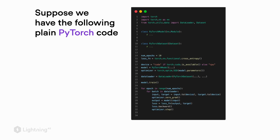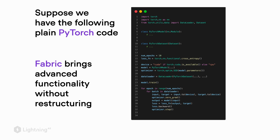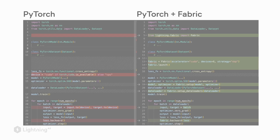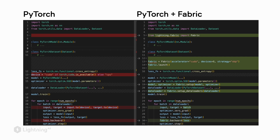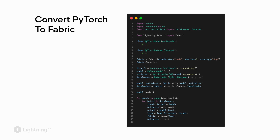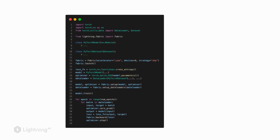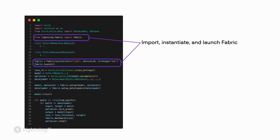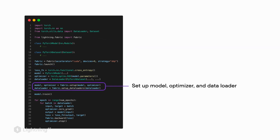So how does it work? How can we use Fabric to scale our PyTorch code without making too many changes? Suppose we have the following plain PyTorch code. We then make a few small changes to bring advanced functionality without restructuring it. As you can see, there are not that many modifications. Walking through these step by step: first, we import, instantiate, and launch Fabric; second, we set up our model, optimizer, and data loader.